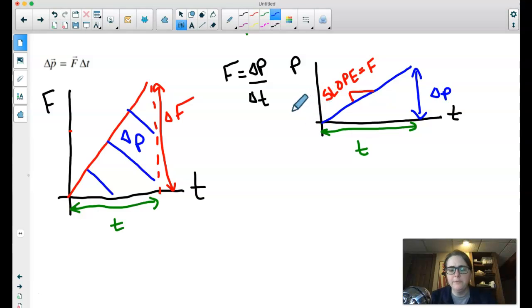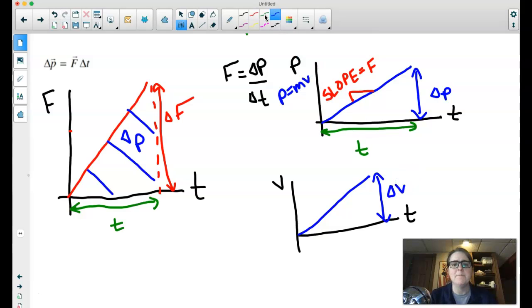Now, this makes a nice parallel to velocity time graphs. So we know momentum is mass times velocity. So if I were to sketch a velocity versus time graph for this same object, it would have the same shape, except it would have different numbers, because I haven't multiplied by the mass. So the momentum time graph has a different scale, but the same shape as the velocity time graph.